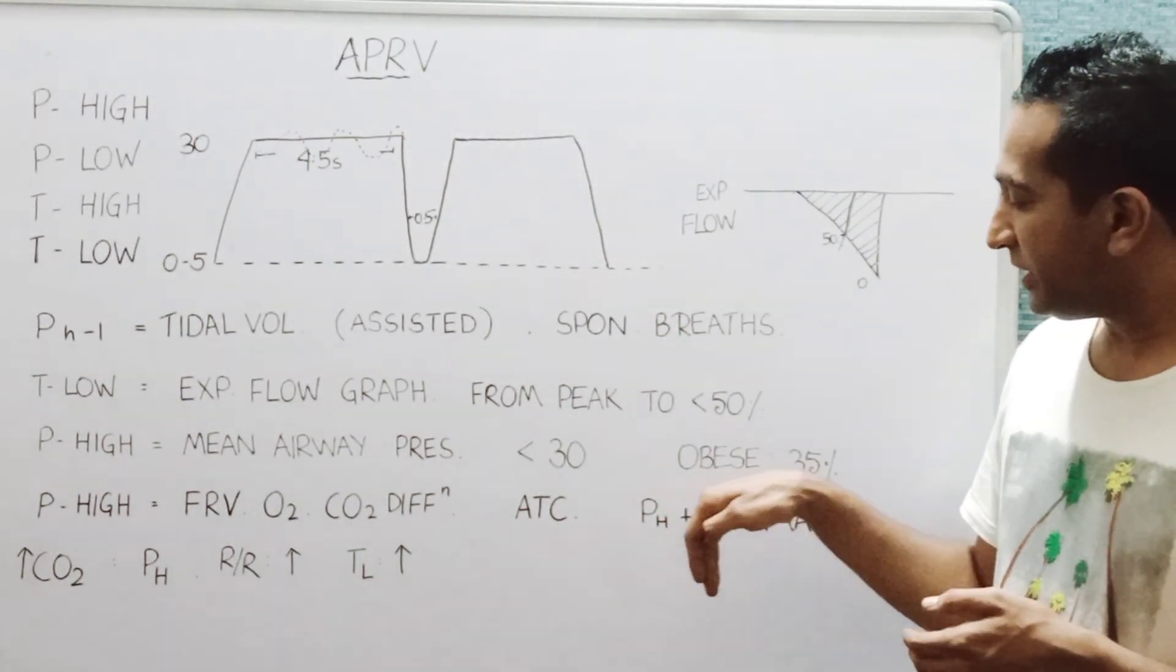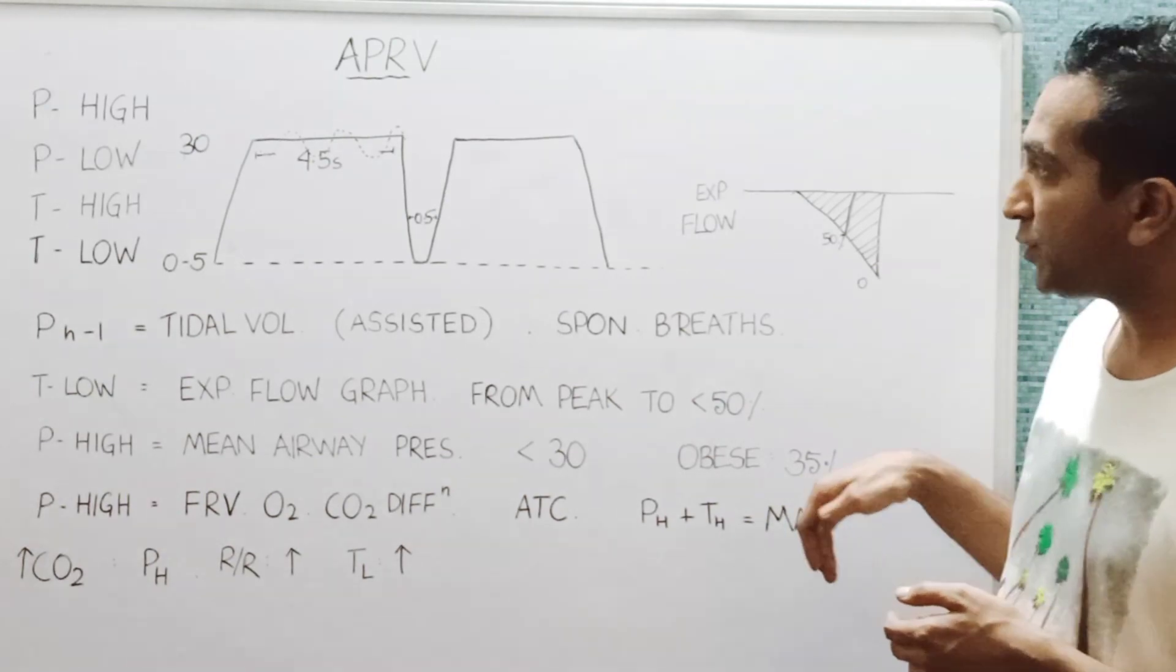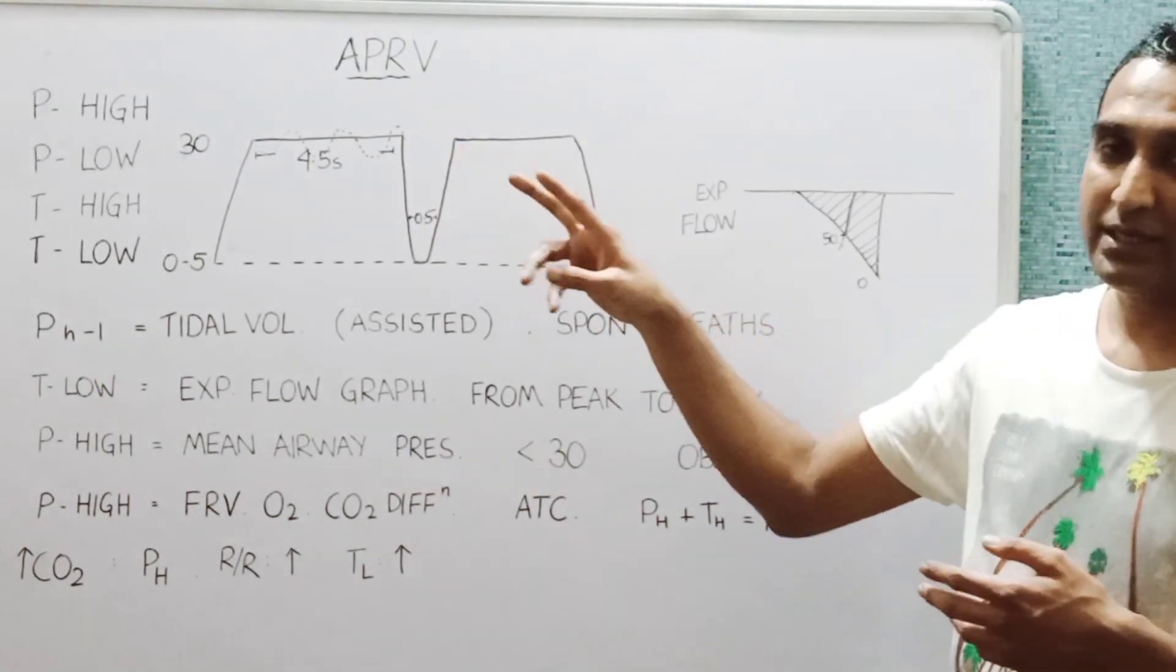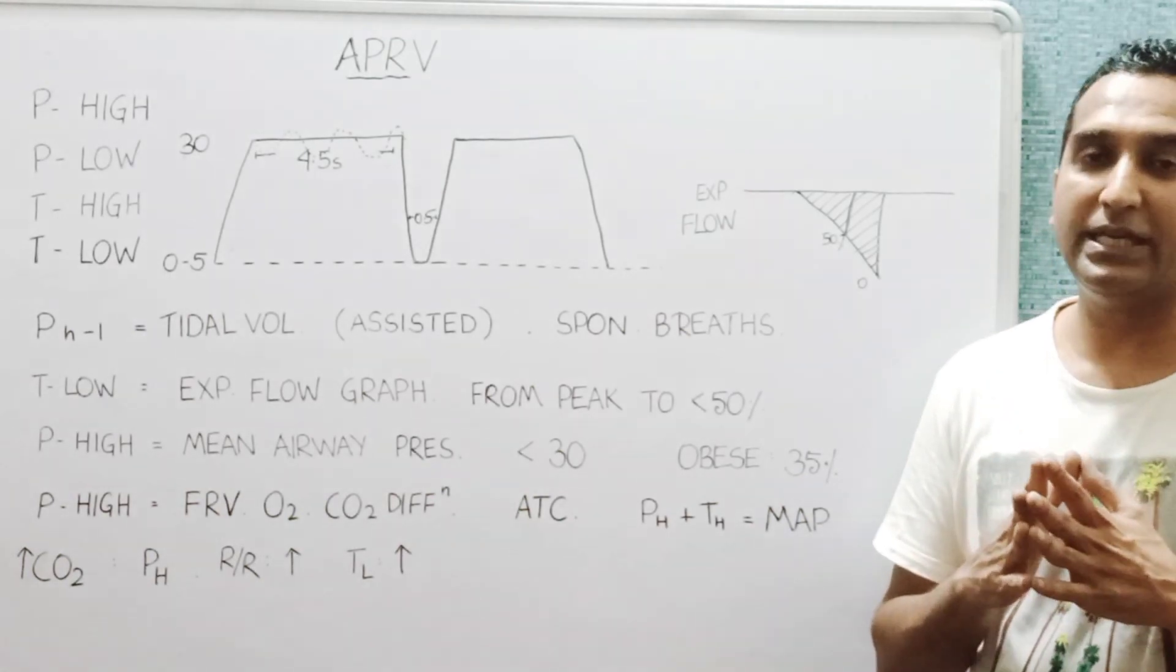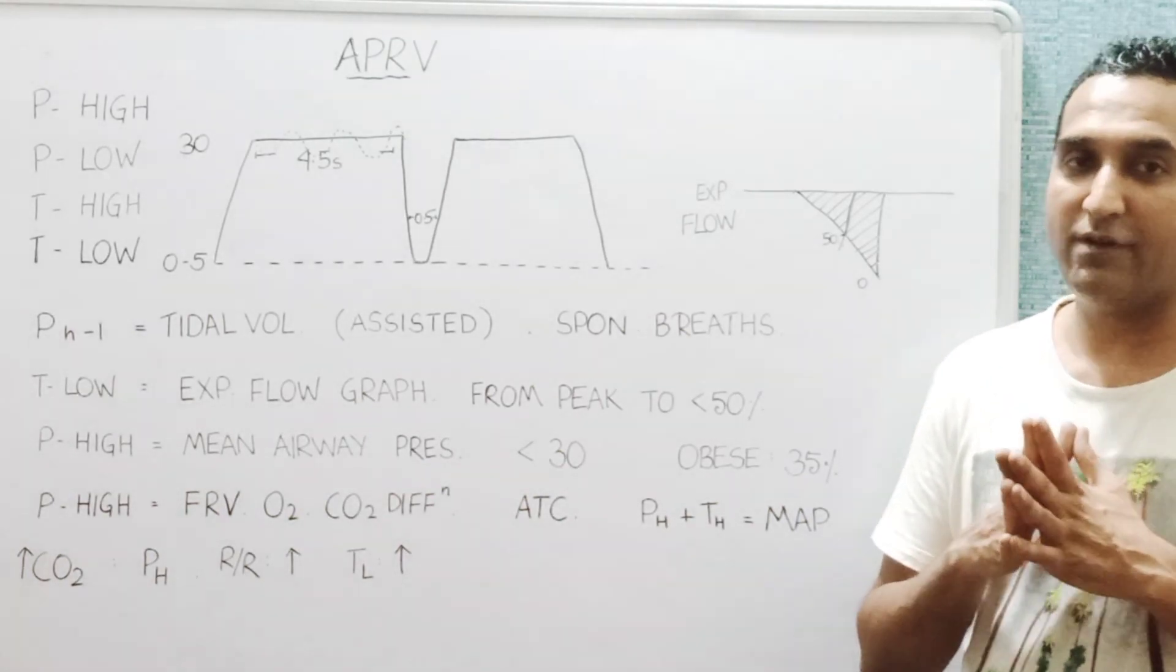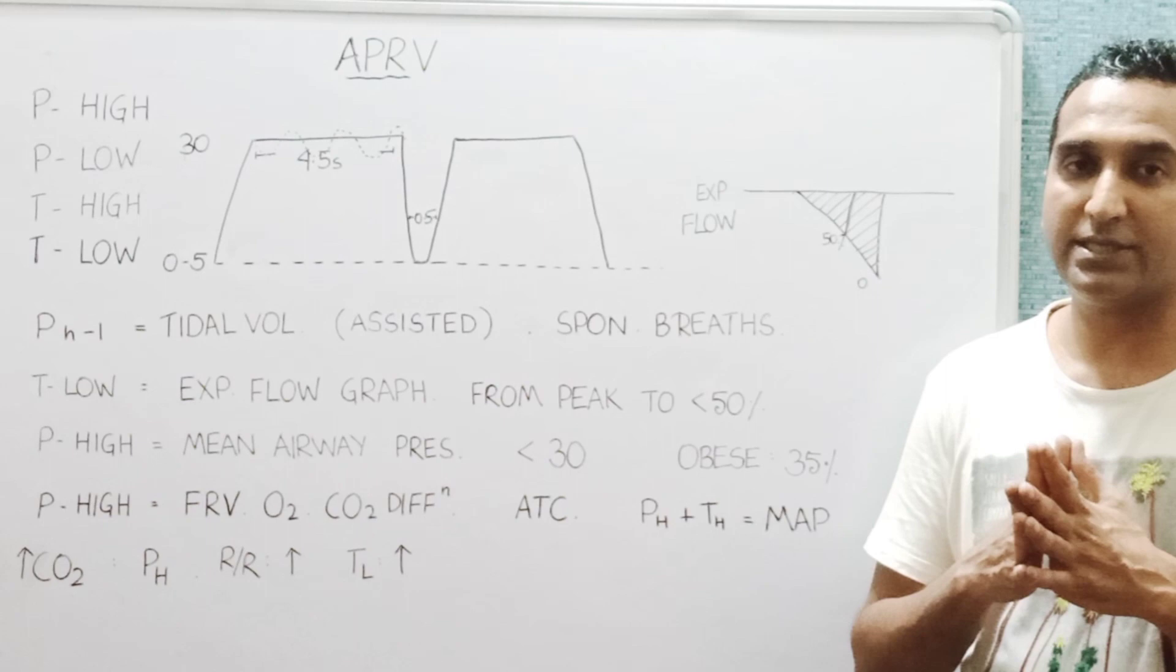The P high and the T high together determine the MAP. So whenever you are manipulating one, you may manipulate the other so that you are able to maintain good mean airway pressure, which is what helps us in oxygenation.